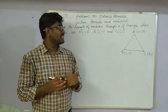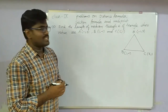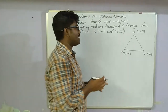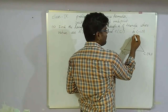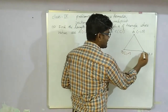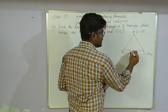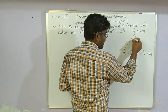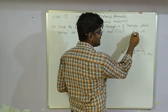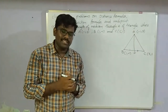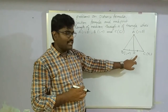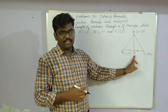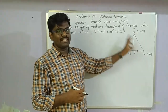A median is a line segment drawn from one vertex to the midpoint of the opposite side. So for median through A, we need midpoint D of BC. Then the length of the median = distance AD.